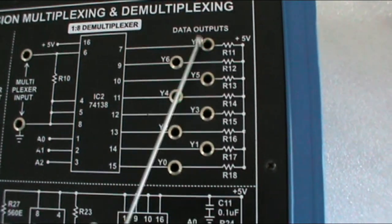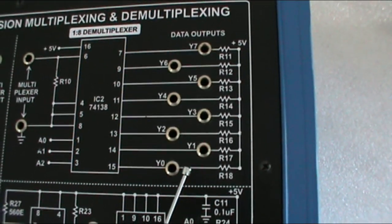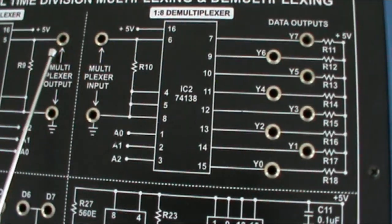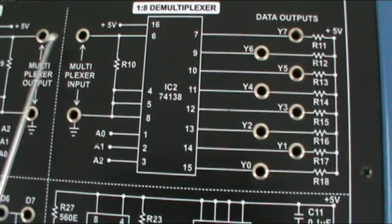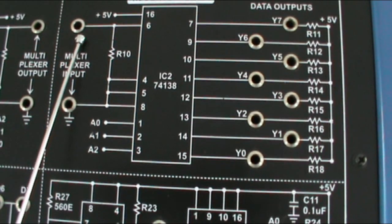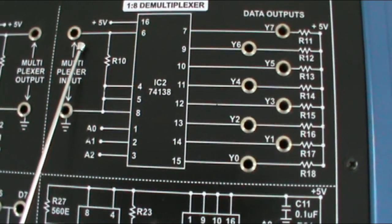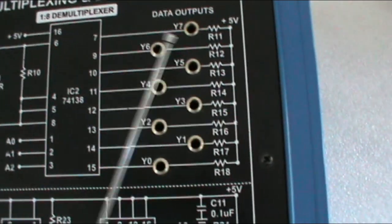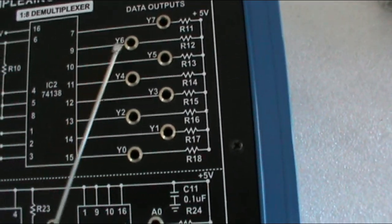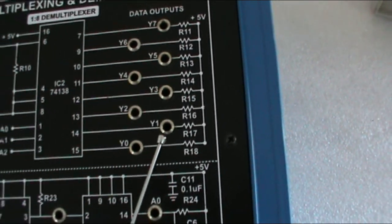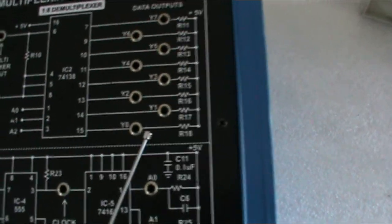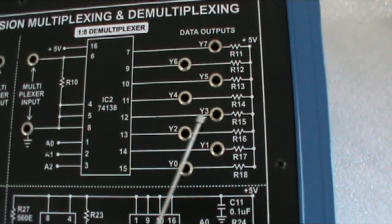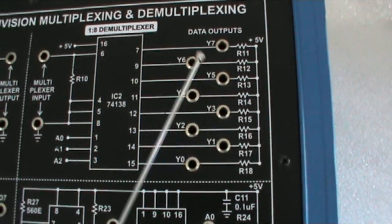This block is the 1-to-8 demultiplexer, built around the 74138 IC. These are the data outputs. The output of this demultiplexer section is available on all these terminals: output Y0, Y1, Y2, Y3, and so on up to Y7.